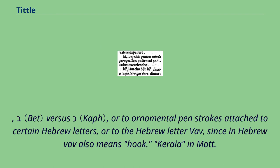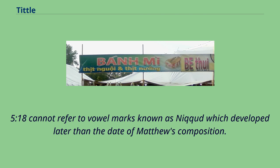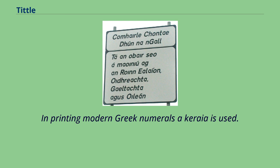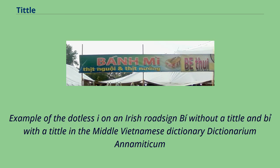Keraia may also refer to ornamental pen strokes attached to certain Hebrew letters, or to the Hebrew letter vav, since in Hebrew vav also means hook. Keraia in Matthew 5:18 cannot refer to vowel marks known as niqqud, which developed later than the date of Matthew's composition. Others have suggested that keraia refers to markings in cursive scripts of languages derived from Aramaic, such as Syriac written in Serta. In printing modern Greek numerals, a keraia is used.